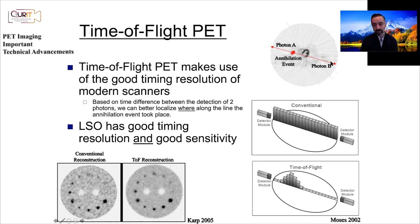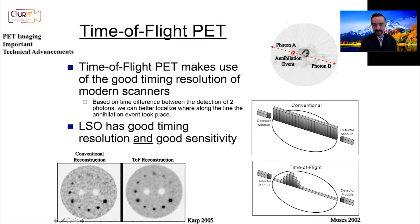What does time-of-flight mean? If the source of an event is not exactly at the center of the field of view, photon A reaches one detector a bit faster than photon B reaches the other. If you have really good timing resolution, you can use that timing information to narrow down the origin — not from somewhere along the entire line of response, but to a smaller area around the most likely position.